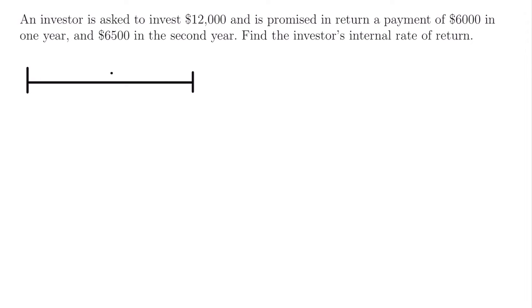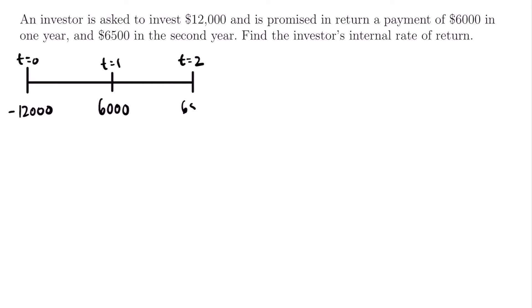Once again we will have three specific dates of interest: time equals 0, time equals 1, and time equals 2. At time equals 0, that is when the investor is investing the $12,000 amount, so that is going to be negative $12,000 — that money is leaving his account. At time equals 1, one year in the future, he is going to get a payment of $6,000, so we will have positive $6,000. And then at time equals 2 he will receive a payment of $6,500.